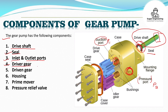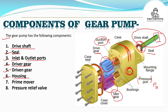Component 4: the driver gear. This is the driver gear and it is connected to the drive shaft. Component 5: the driven gear. This is the driven gear, also known as the idler gear. Component 6: housing. The housing is also known as the casing of the pump, and it is used to provide the path to the fluid. Component 7: the prime mover. Component 8: the pressure relief valve.